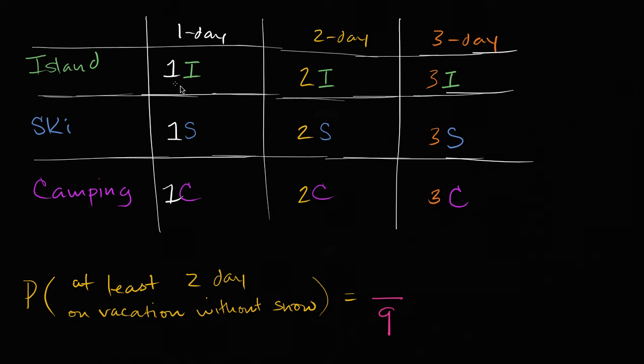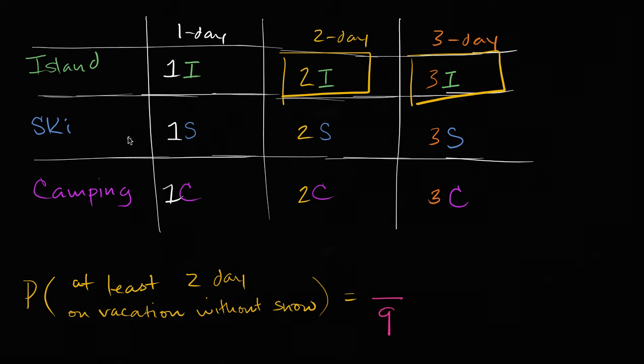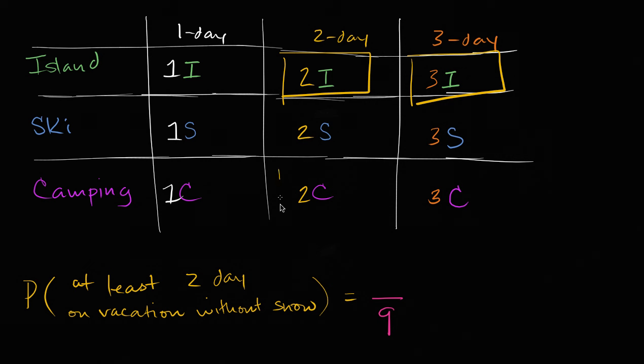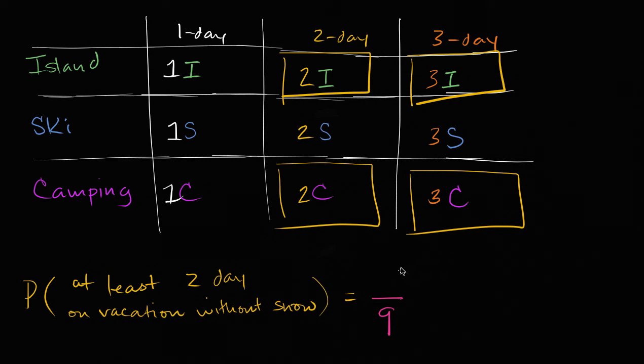Well, let's think about these outcomes. This one is no snow, but it's only one day. This is two days without snow, so we can circle that one. This is three days without snow, so we can circle that one. All of these have snow. This is one day without snow. This is two days without snow, and this is three days without snow.